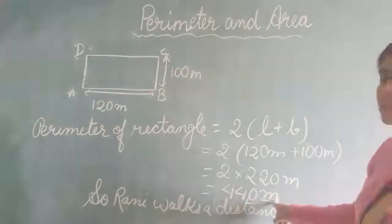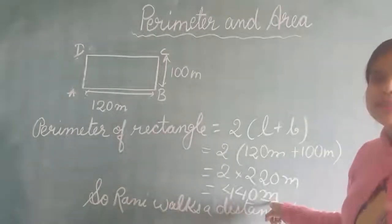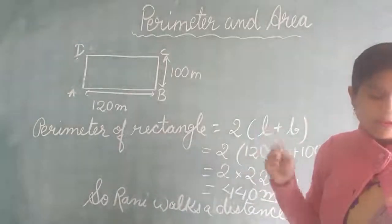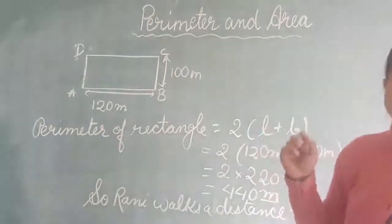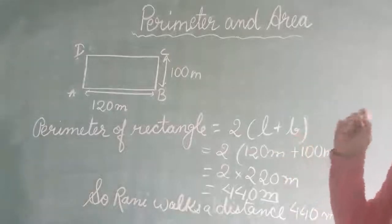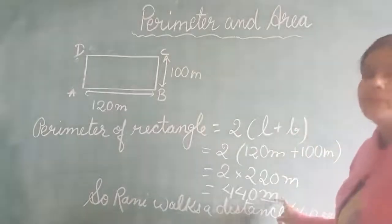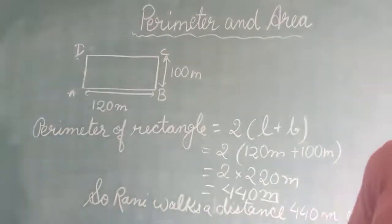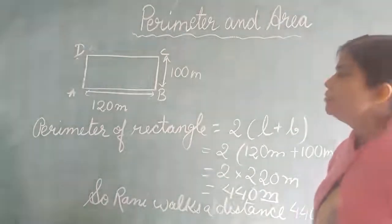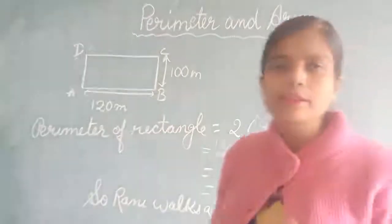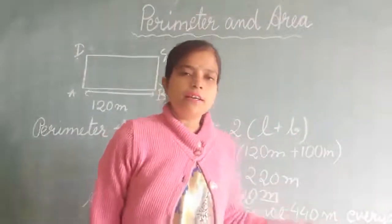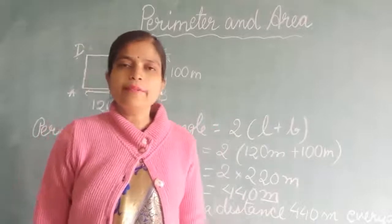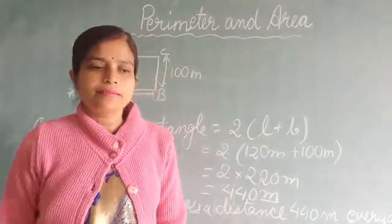As I have written in metres — if the measurement is given in centimetres, we write centimetres. We always write the unit of measurement after the answer; that is very important. So children, like this, we have learnt how to find the perimeter of a plane figure and a composite figure both. Thank you, children. Have a nice day.